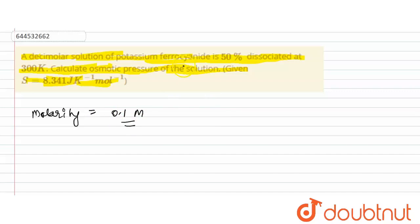And what is the formula for potassium ferrocyanide? The formula for potassium ferrocyanide is K4Fe(CN)6. Now it is given that the potassium ferrocyanide is 50% dissociated, so the degree of dissociation for potassium ferrocyanide is 50 by 100, or you can say it is 0.5, which is the degree of dissociation.